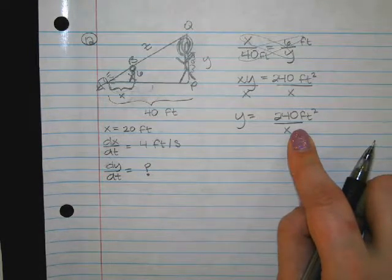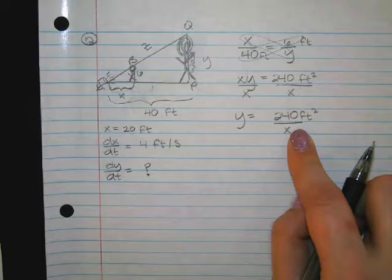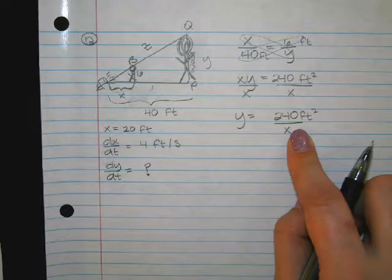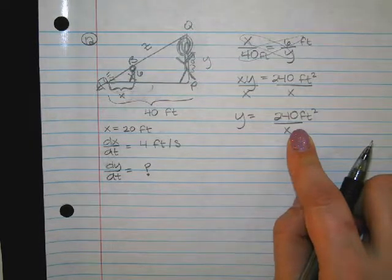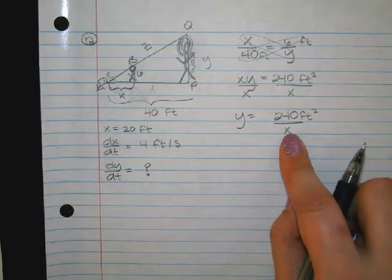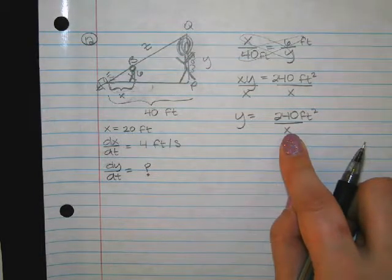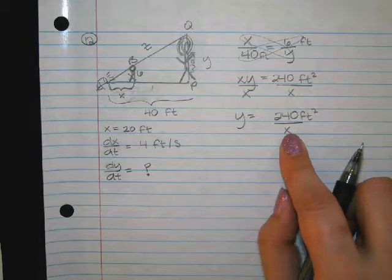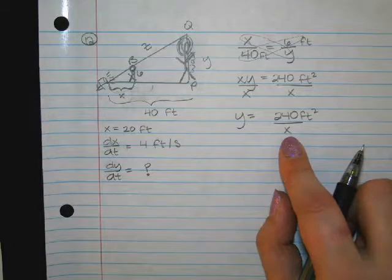So this is like for this problem, if they gave me like a different distance than 20, I could use this equation again and solve. Because notice we didn't plug the 20 in to get this equation, did you guys notice that? So we can say he's 20 feet away from the spotlight, we can say he's 10 feet away from the spotlight, we can say he's 35 feet away from the spotlight. We can use this equation every single time to do a bunch of different problems if they want to change that variable of X to a different value.